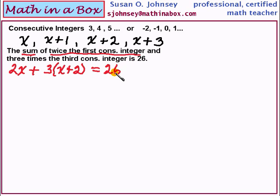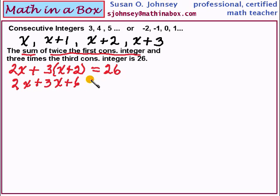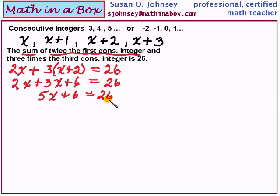So here is our equation. Now we will solve it. Multiply the 3 through: that gives 3x plus 6. We also add the 2x at the beginning, so our equation becomes 5x plus 6 equals 26. We subtract 6 from both sides and have 5x equals 20. Then we divide by 5 and x equals 4.